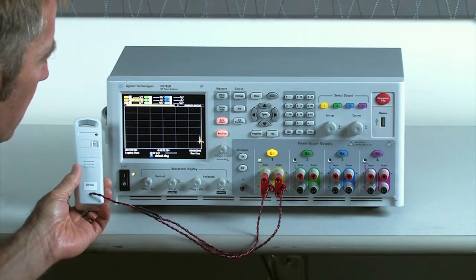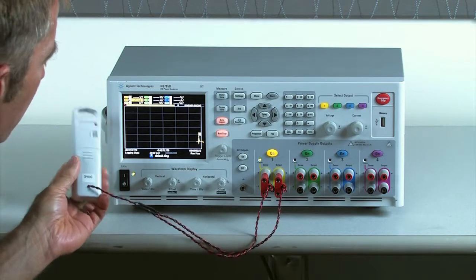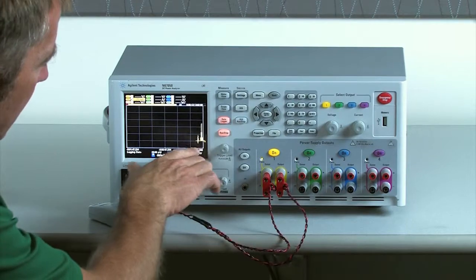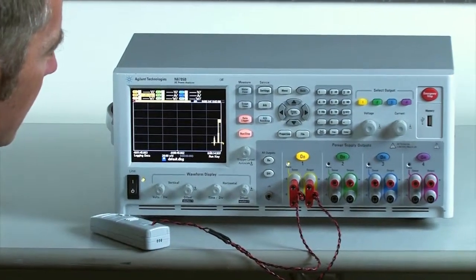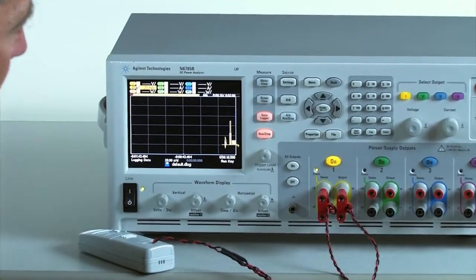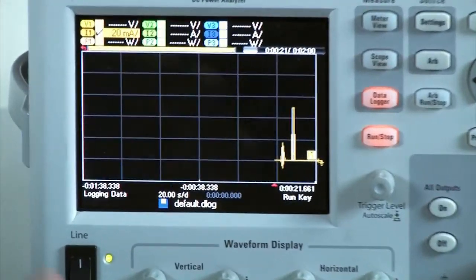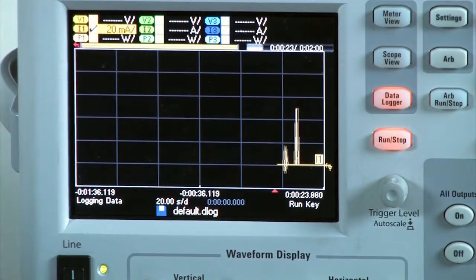We'll see some current being drawn from the temperature sensor as it turns on. Then it returns back to an idle state, so it's pulling very little current. Then we see our first pulse of current, and that's the wireless temperature sensor sending out its data.